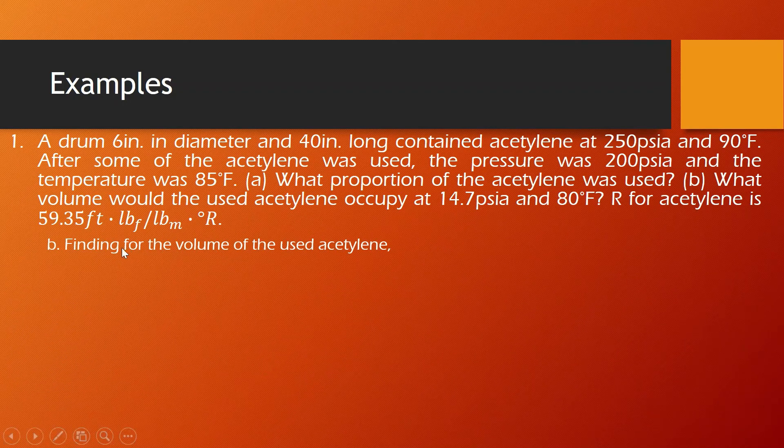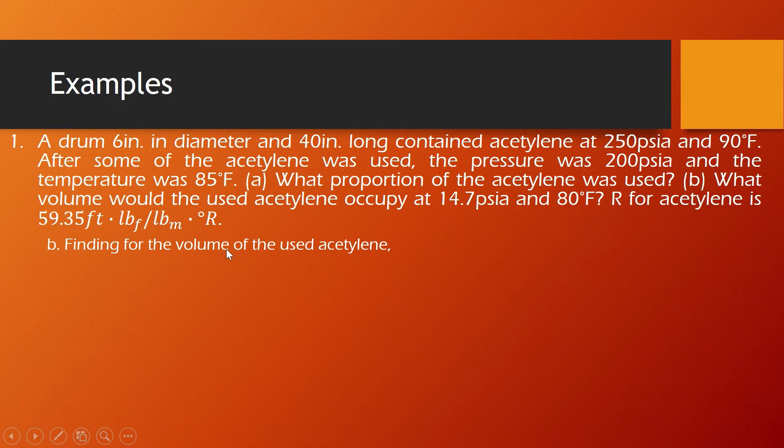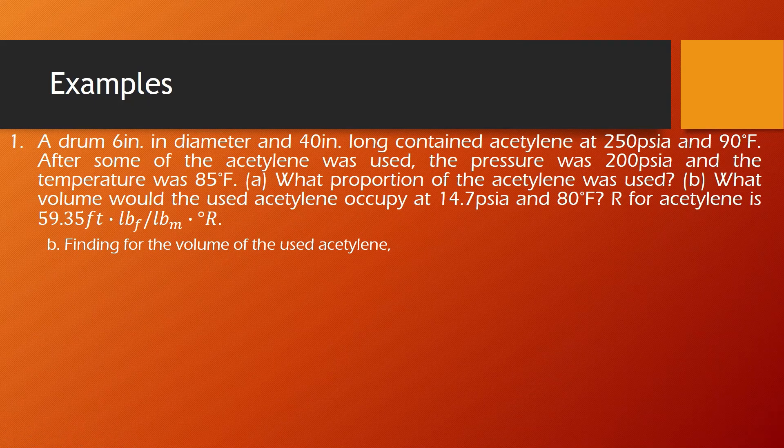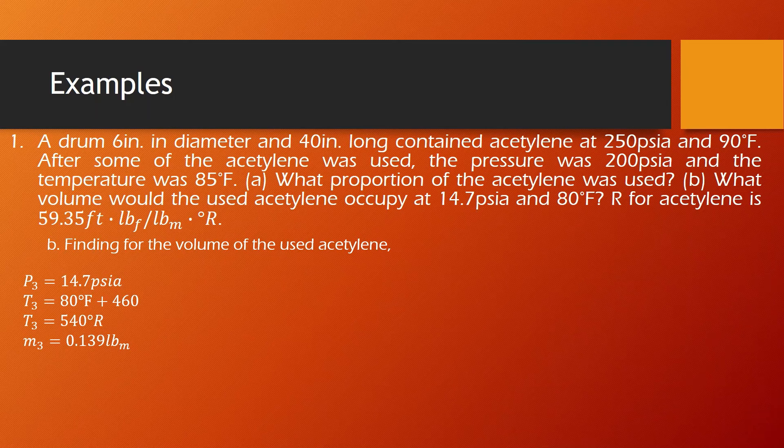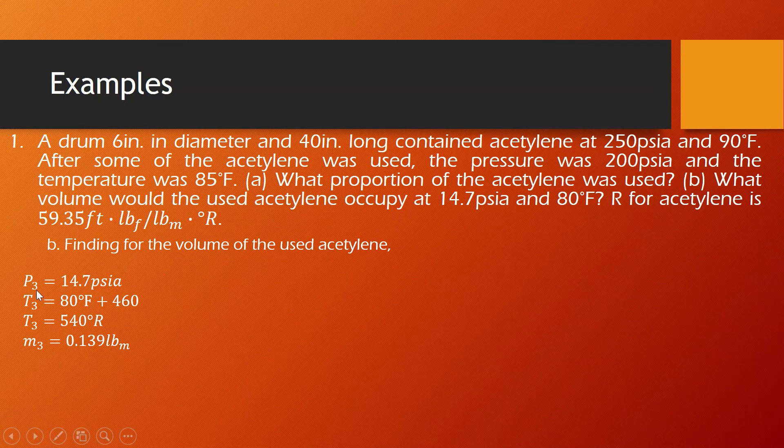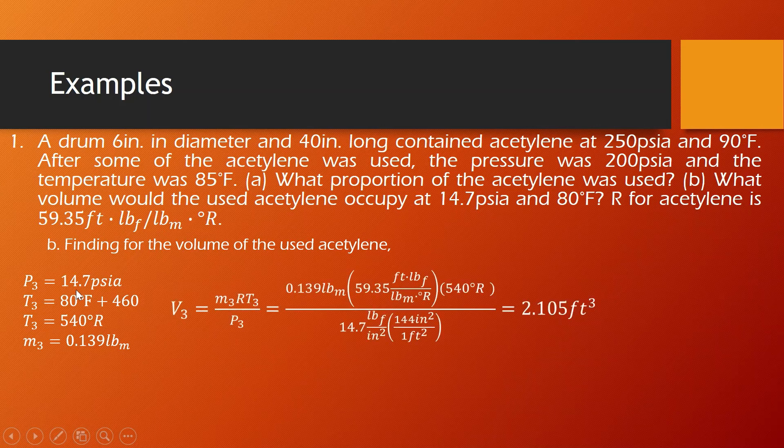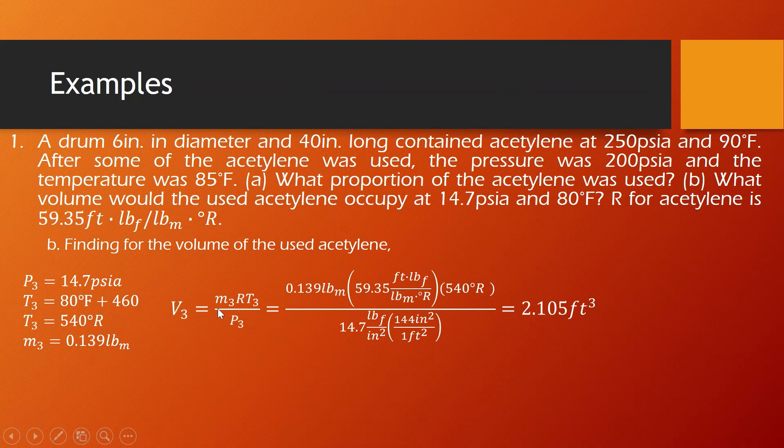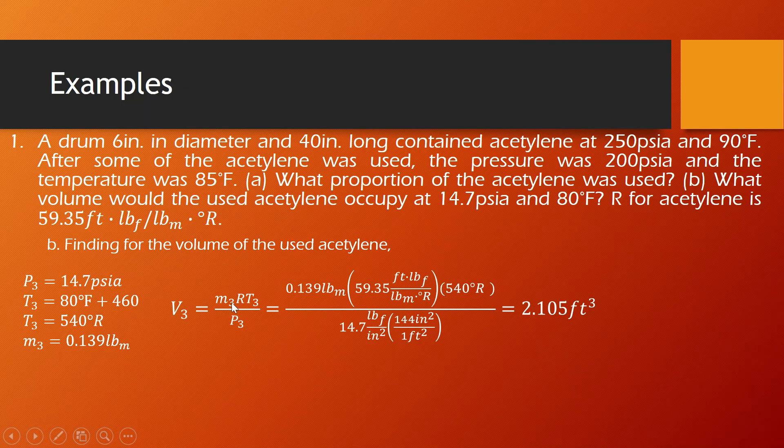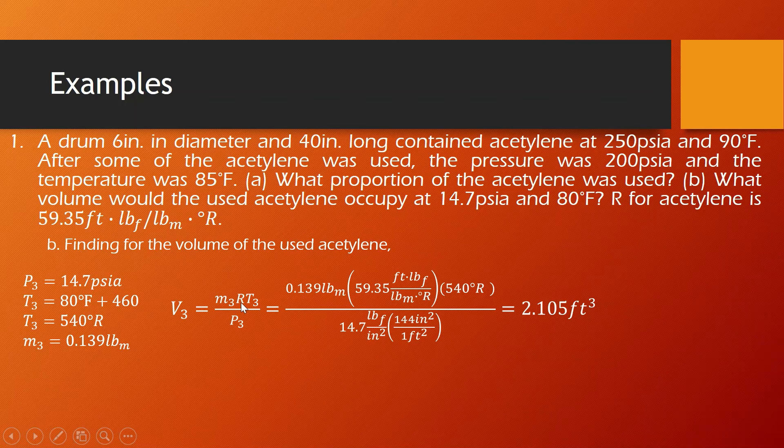For letter B, in finding the volume of the used acetylene, we are going to use the third specifications for the used acetylene. So our formula to be used is the third volume, which is equal to the third mass, the used acetylene mass, times R, times the third temperature over the third pressure.